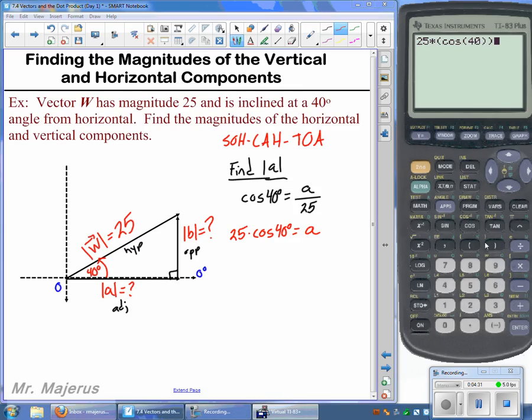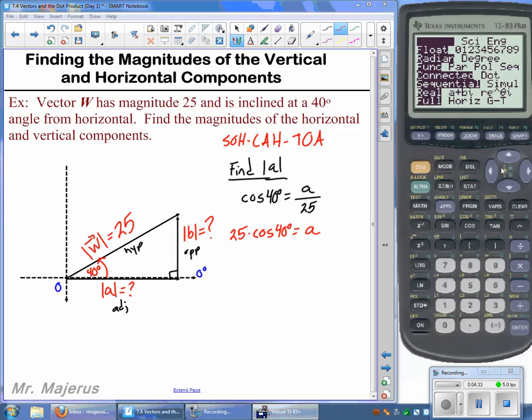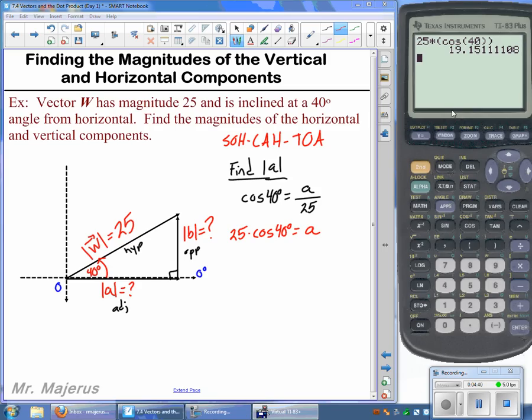One thing you'd want to check real quick, just to make sure your mode's in degrees. Mine happens to be in radian, so I'm going to switch that over. And get out of there. Hit enter. And that should give us, then, the magnitude of A, which is 19.15, if we round it off to two decimal places.